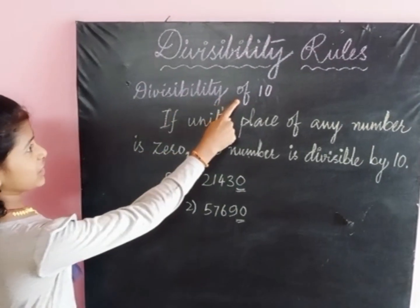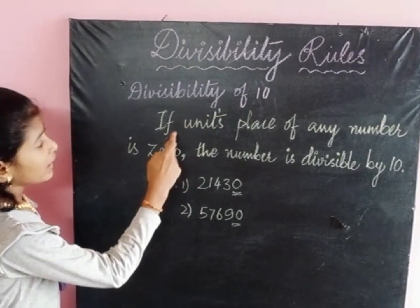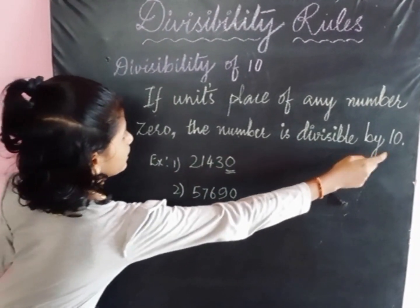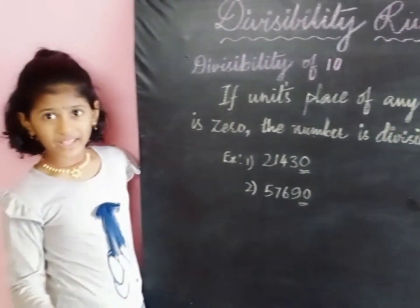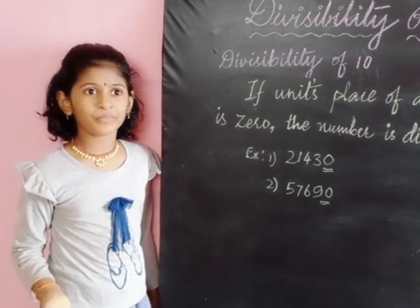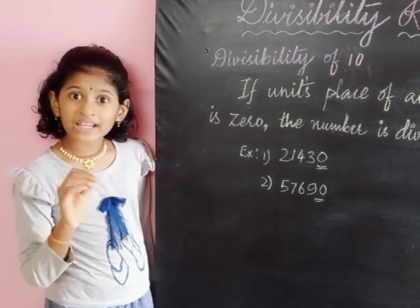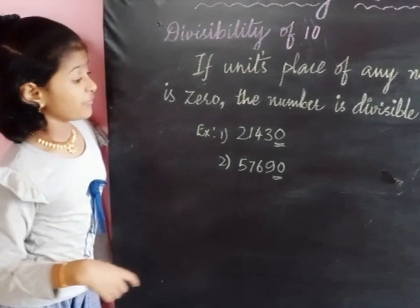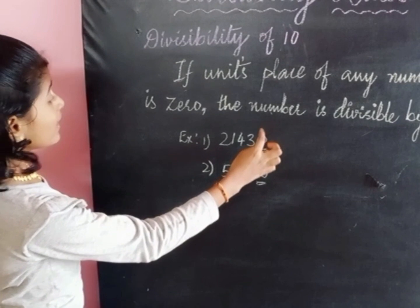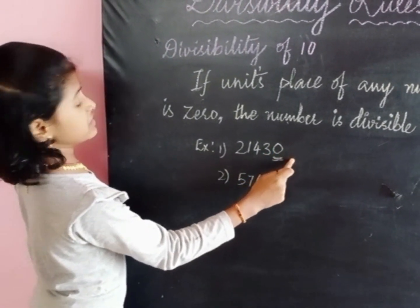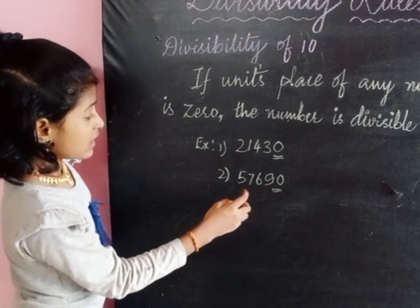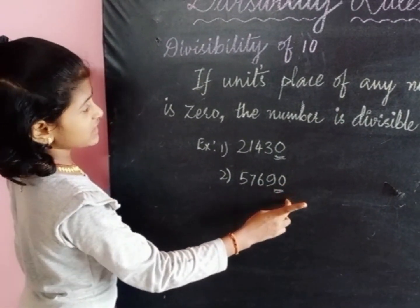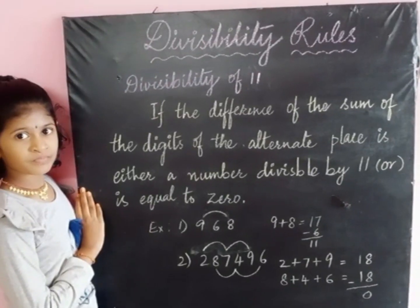Let us see divisibility rule of 10. If the unit's place of any number is 0, the number is divisible by 10. For example, 21430 — it has 0 at the end, so it is divisible by 10. And 57690, which is also having 0 at the end, is also divisible by 10.